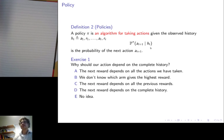So what is a policy? A policy is generally an algorithm for taking actions given the observed history. So let's say the history is a sequence of rewards and actions until now. Then the next action will depend on the complete history of observations if you have a particular policy. Now, the question is, why should our action depend on the complete history? Is it because the next reward depends on all the actions I've taken? Is it because we don't know which arm gives the highest reward? Is it because the next reward depends on all the previous rewards? Or is it because the next reward depends on the complete history?